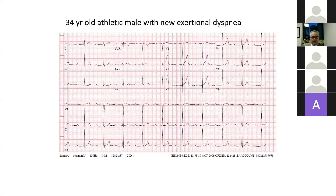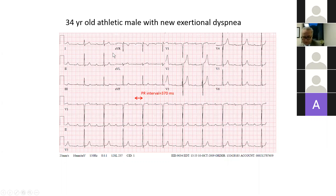Here is an example: a 34-year-old athletic male with new exertional dyspnea. There is prolongation of the PR interval at 370 milliseconds. This is markedly abnormal for a 34-year-old, and there is no doubt that further investigations are indicated. Because of his exertional dyspnea, he was sent for a treadmill stress test.